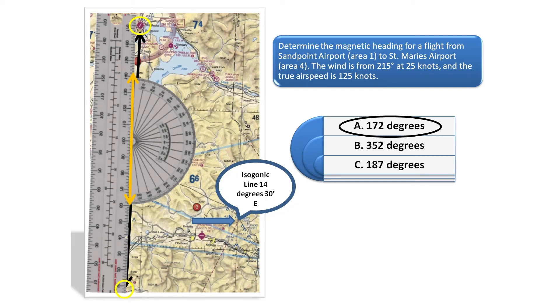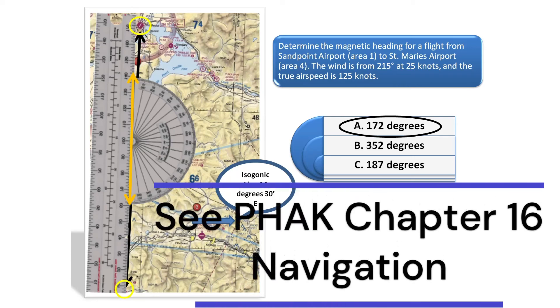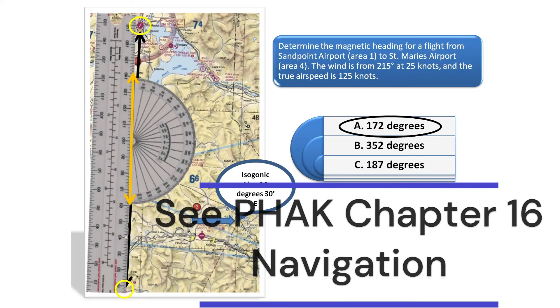More navigational related topics, including magnetic deviations and variations and how to chart a course for flight planning, can be found in chapter 16 of the Pilot's Handbook of Aeronautical Knowledge.